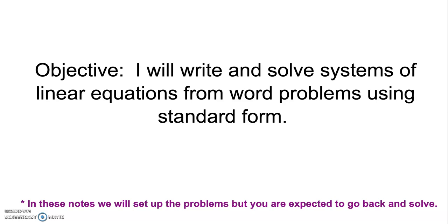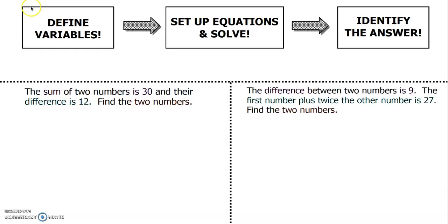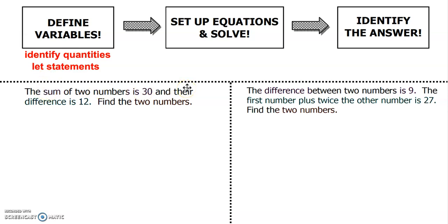A lot of these problems lend themselves to elimination. So three steps to word problems with systems: you need to define the variables, identify your quantities and write your let statements. The way we identify those quantities is going to be through annotation of the problems. If you don't already have one, go ahead and stop now and get a highlighter, because we're going to be highlighting throughout these problems, and I'm going to check for that when I check your notes.